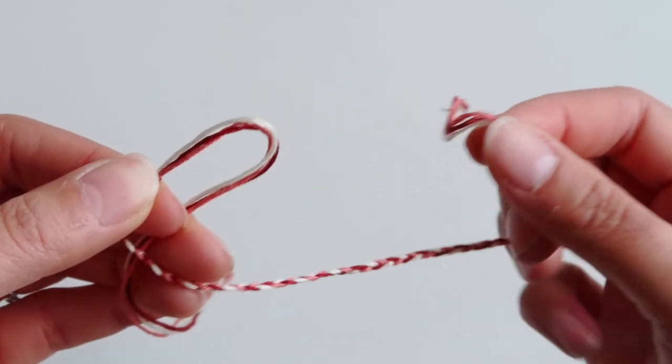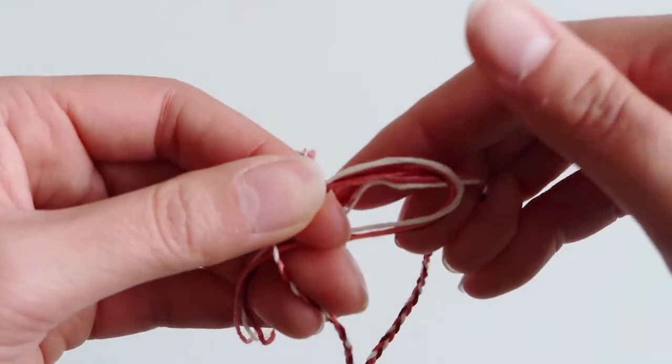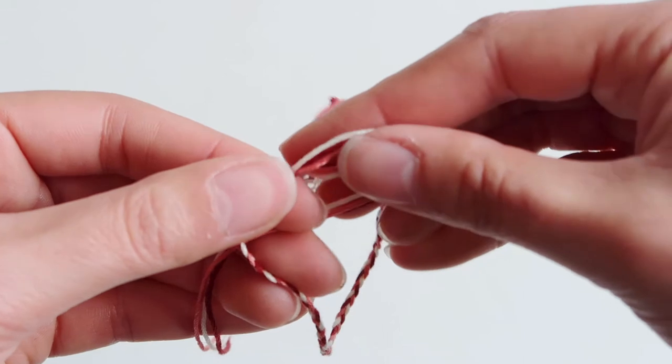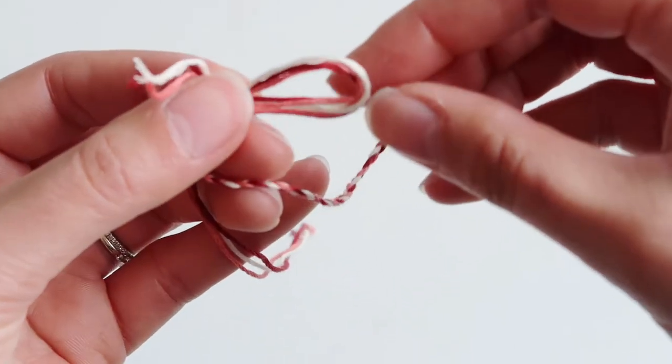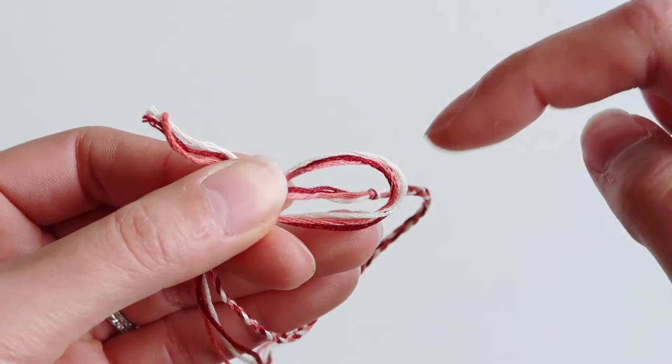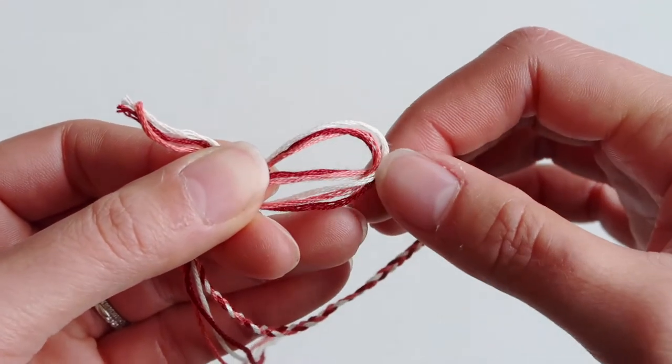So again creating that loop on the left and then using the right to sort of create those three stripes. I think that's what I'm trying to show you here. So placing that middle stripe using the right part of the bracelet.